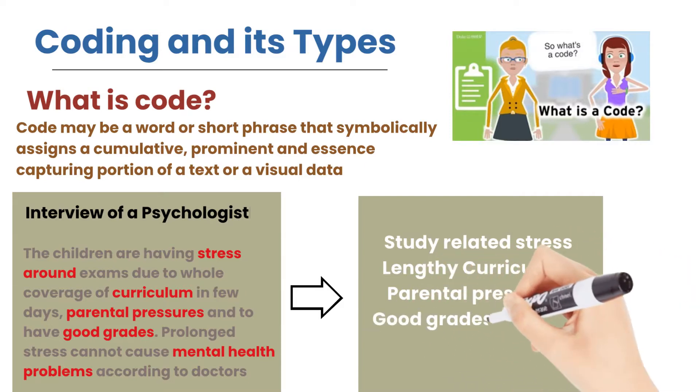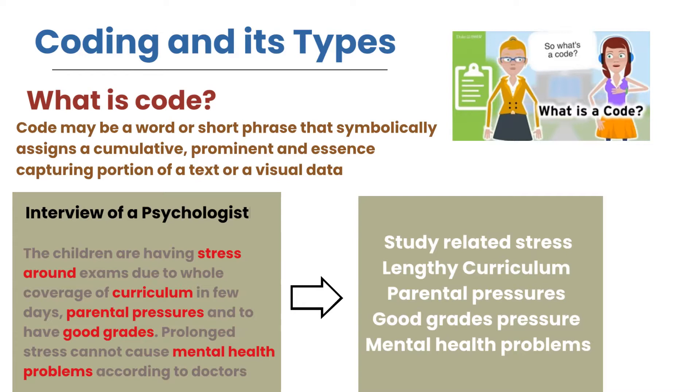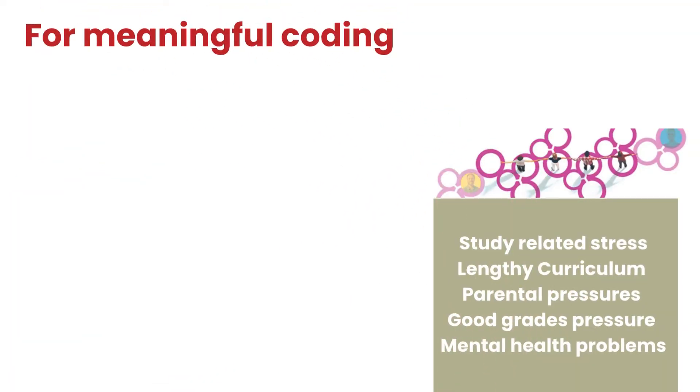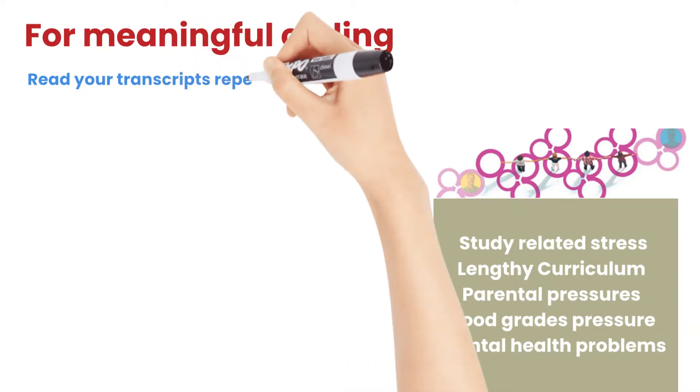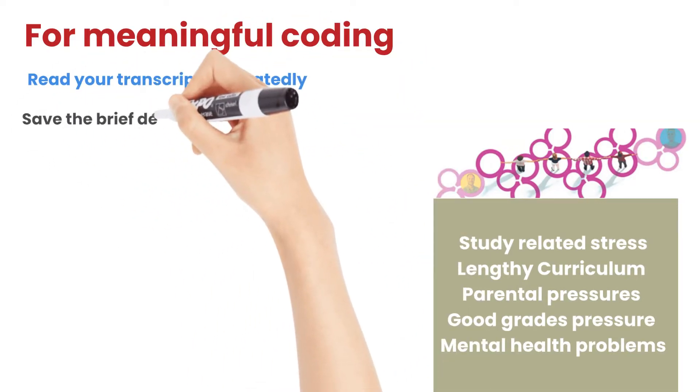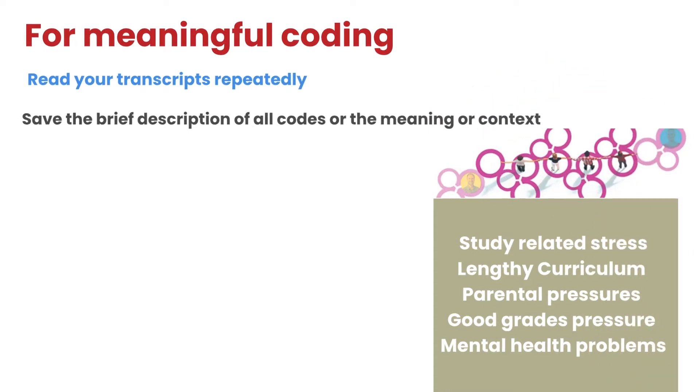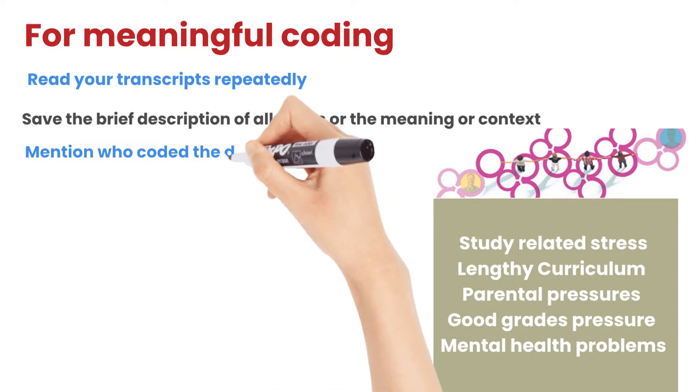This is also called initial coding. You can see that I have highlighted all the important chunks in red color in this interview extract. Remember few points for meaningful coding. Before coding, read your transcripts repeatedly. Save the brief description of all codes or the meaning or context. Also mention who coded the data and when, specifically in a large project.